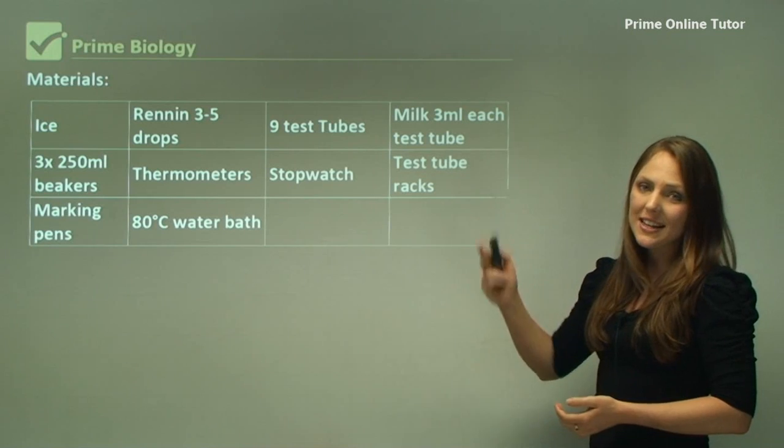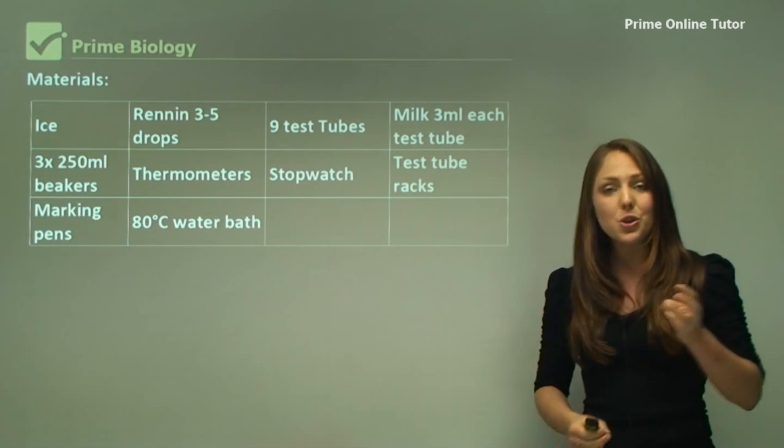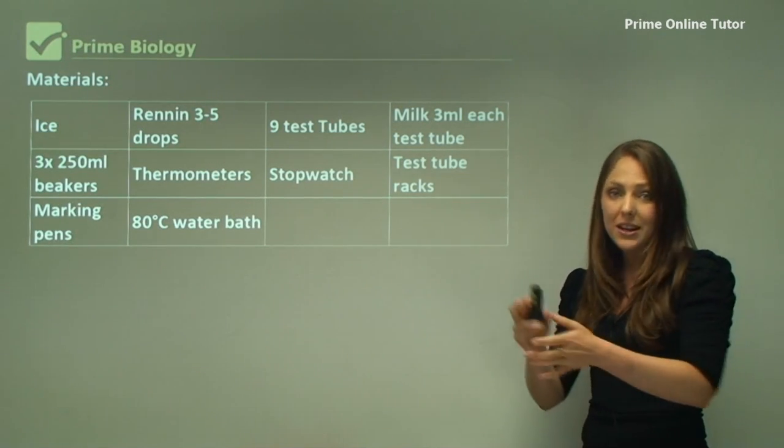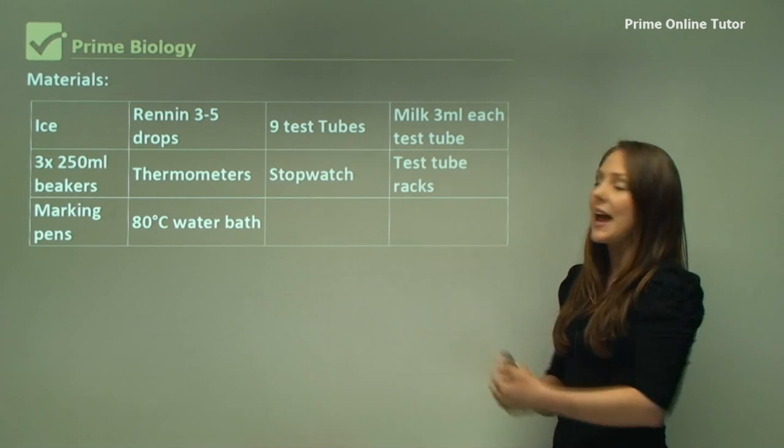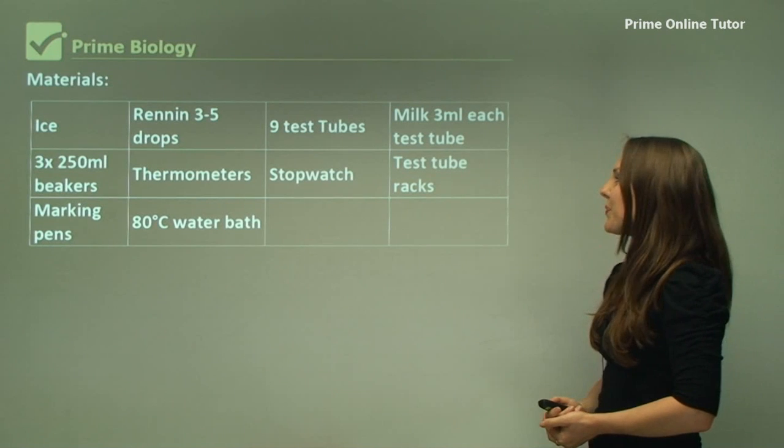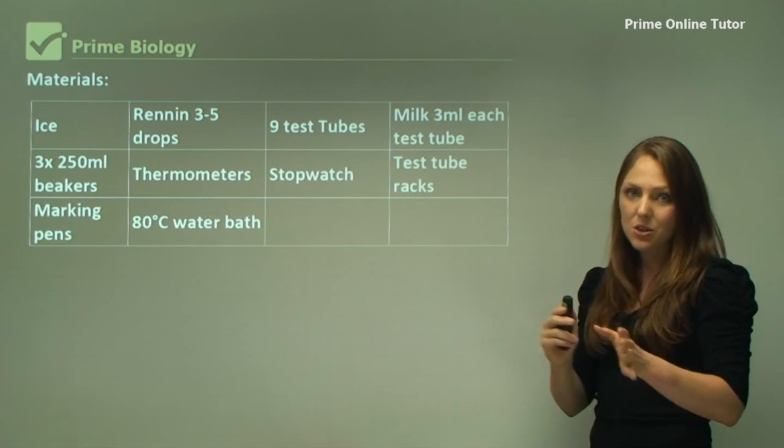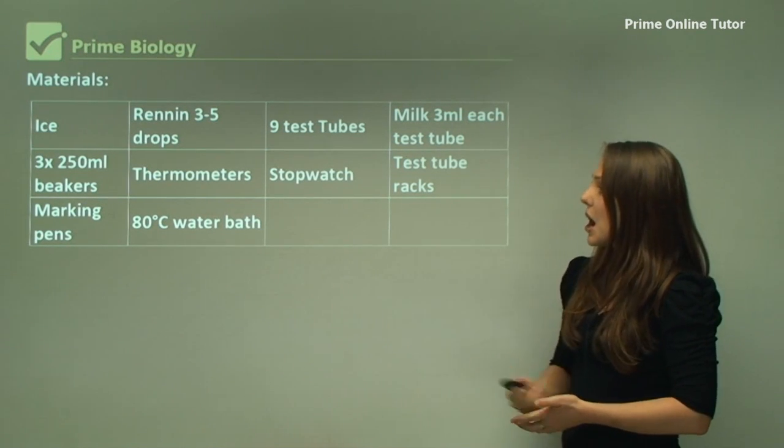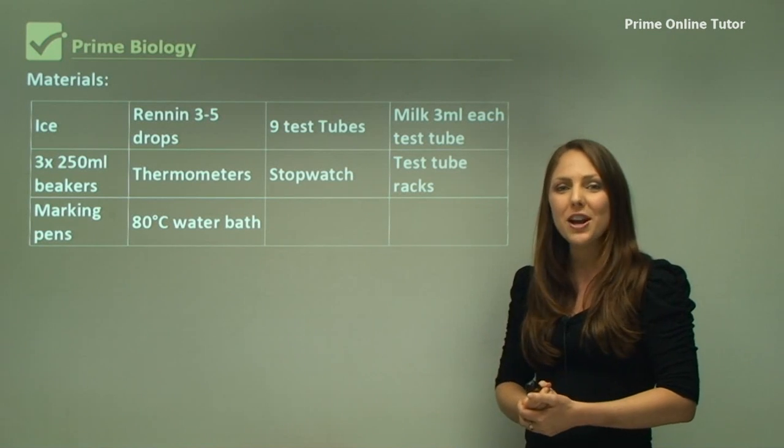We have nine test tubes: three test tubes in each environment, so three in an icy environment, three at about 40 degrees, and three at 80 degrees. We have three mils of milk in each test tube. We need test tube racks to hold the test tubes.